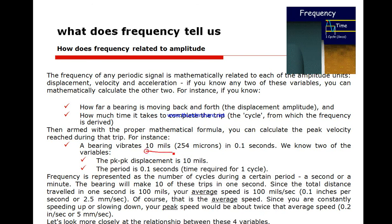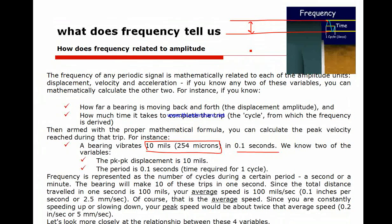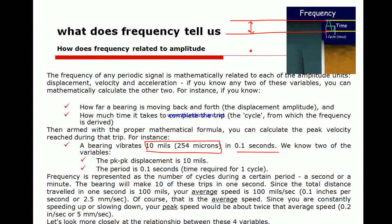If you have a bearing vibrating 10 mils which equals 254 microns in 0.1 second, it does one cycle. As you see on the graph here at the top, from here to there, it's doing this in one cycle in 0.1 second. This period is 0.1 second - the time required to do one cycle.